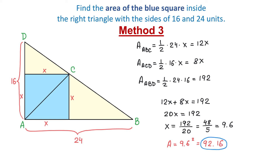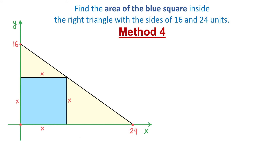So far, we used three methods and each one gave us the same result. Now let's see one more method. With method 4, we will use coordinate geometry. We have the rectangular coordinate system where this point is at the origin, this point is 24 units to the right on the x-axis, and this one is 16 units up on the y-axis. We start by writing the equation of the line that passes through the hypotenuse of this triangle, using the slope-intercept form y equals mx plus b.